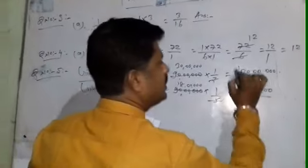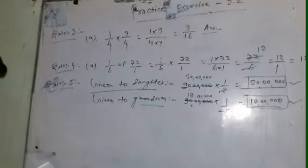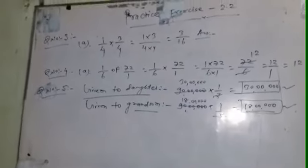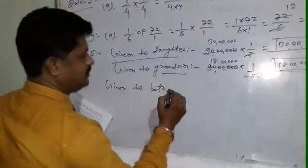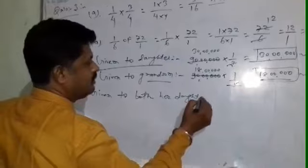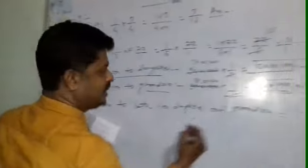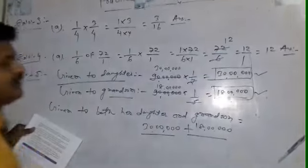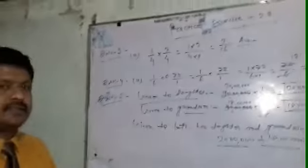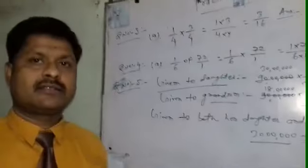So 30 lakh is given to her daughter and 18 lakh is given to her grandson. The remaining goes to her sister. The total amount given to both daughter and grandson is 30 lakh plus 18 lakh, which equals 48 lakh.